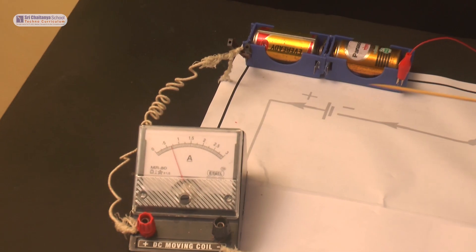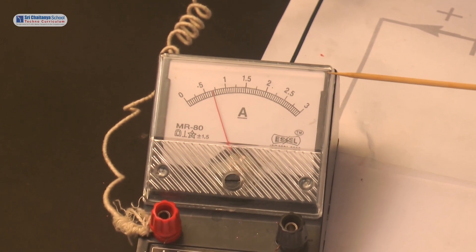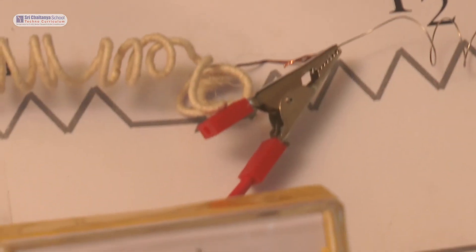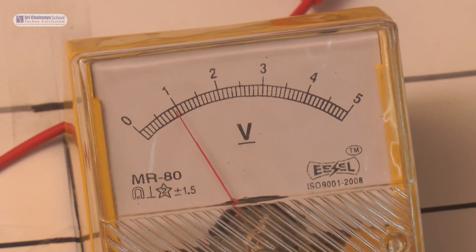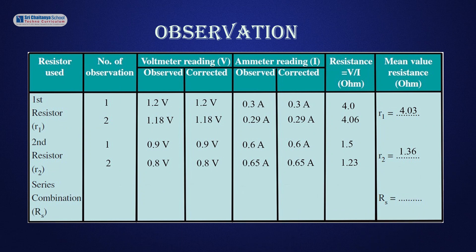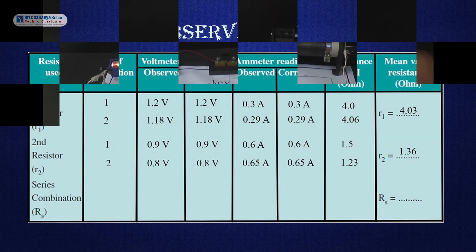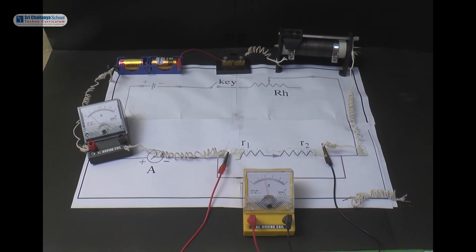When the second resistor is connected in series, the ammeter reading is 0.6 ampere and voltmeter reading is 0.9 volts, and the corresponding resistance is 1.5 ohm. In trial 2, the ammeter reading is 0.65 ampere and voltmeter reading is 0.9 volts, and the corresponding resistance is 1.23 ohm. Therefore, the mean resistance of the second resistor is 1.36 ohm.